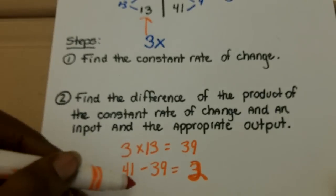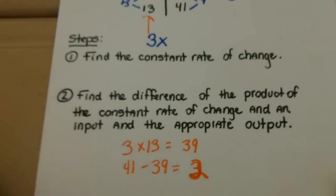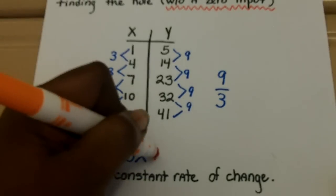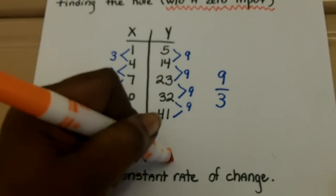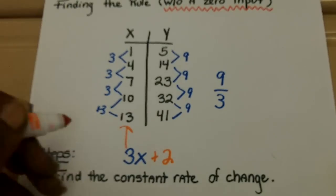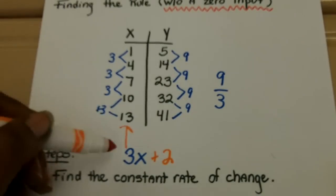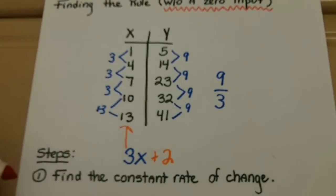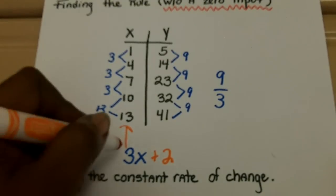All right. So, 41 minus 39 is 2. So, therefore, that difference is what we need to add on to get the appropriate output. And, again, if you want to pick a random point to pick, like you could pick the 10, plug it in, and see if you, in fact, get 32 to check your rule.